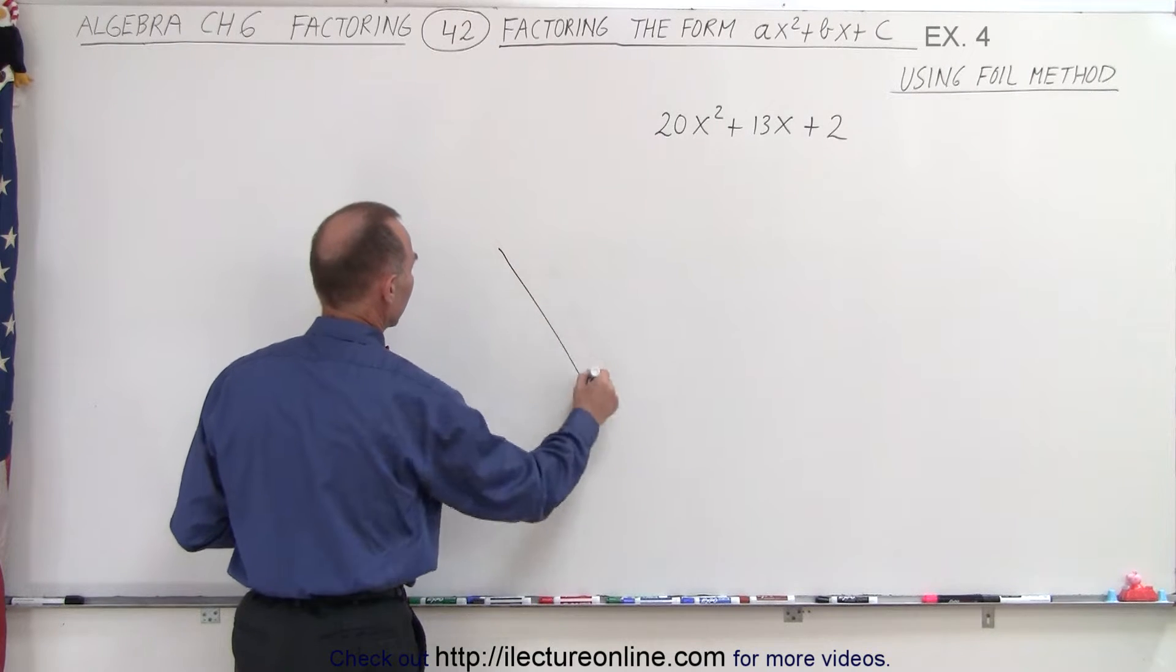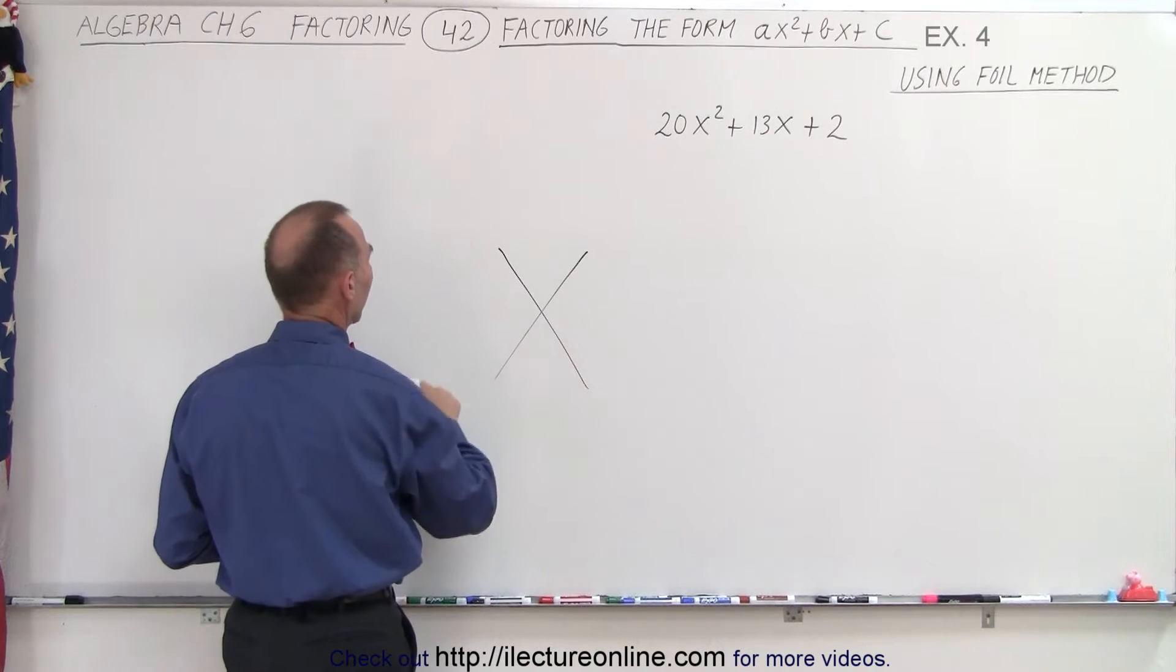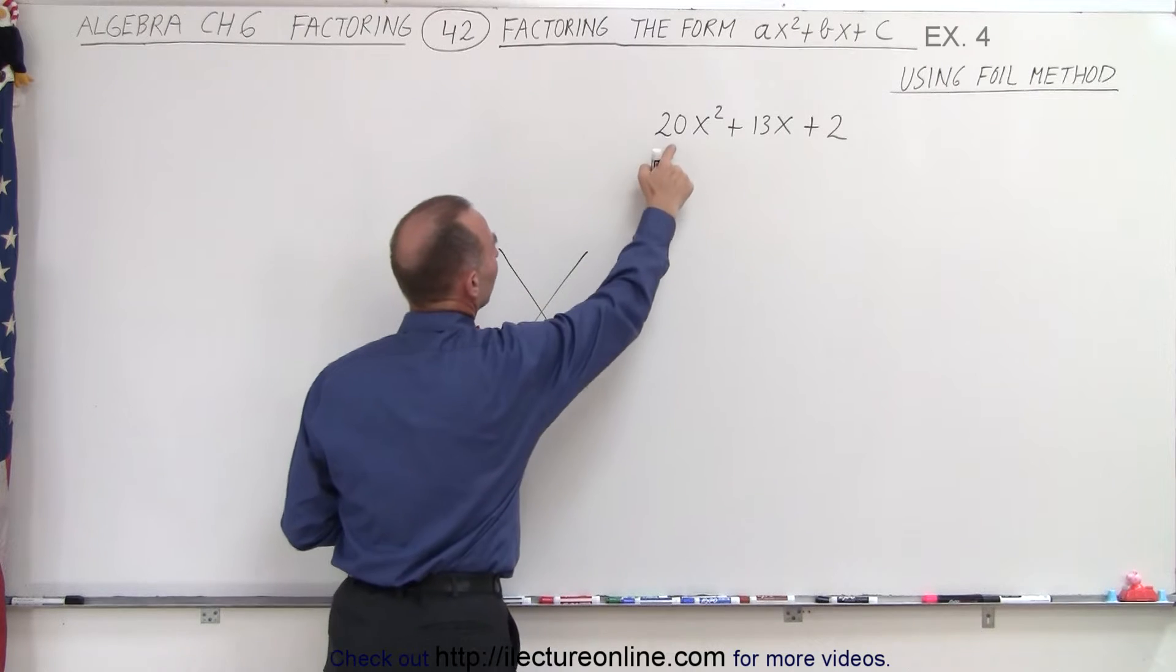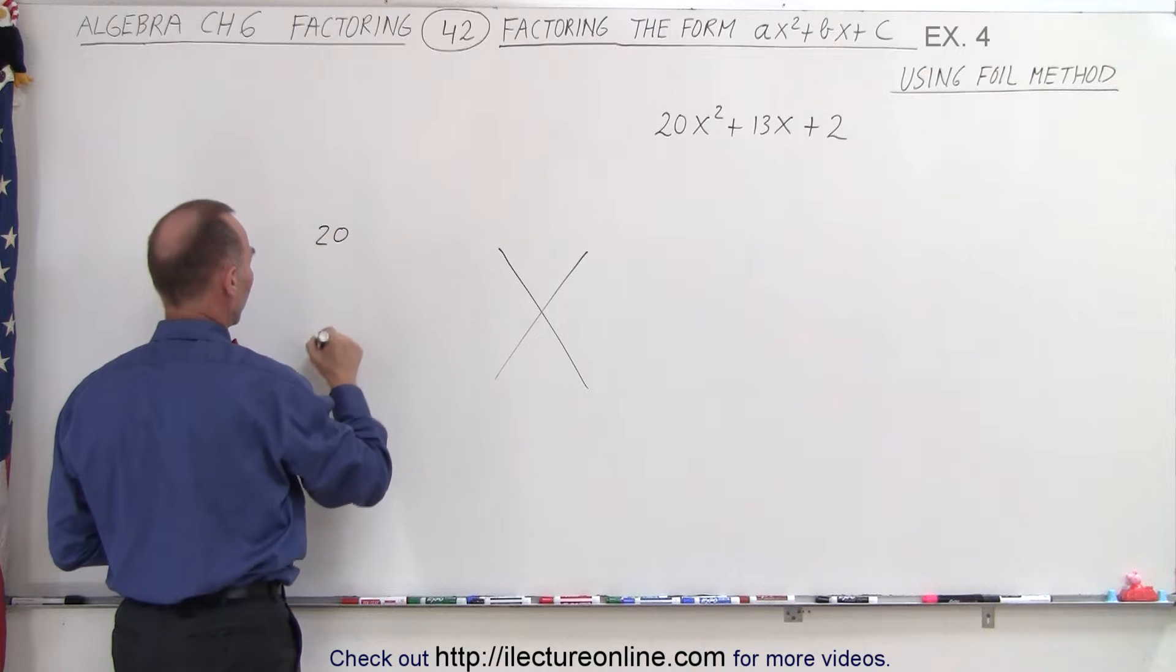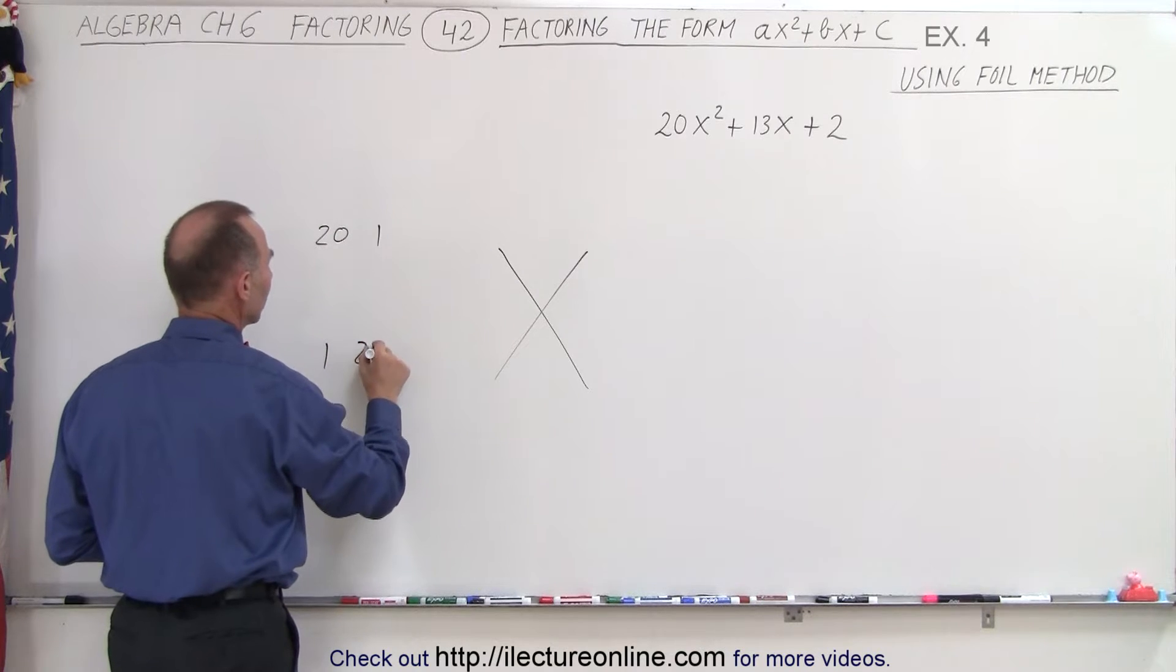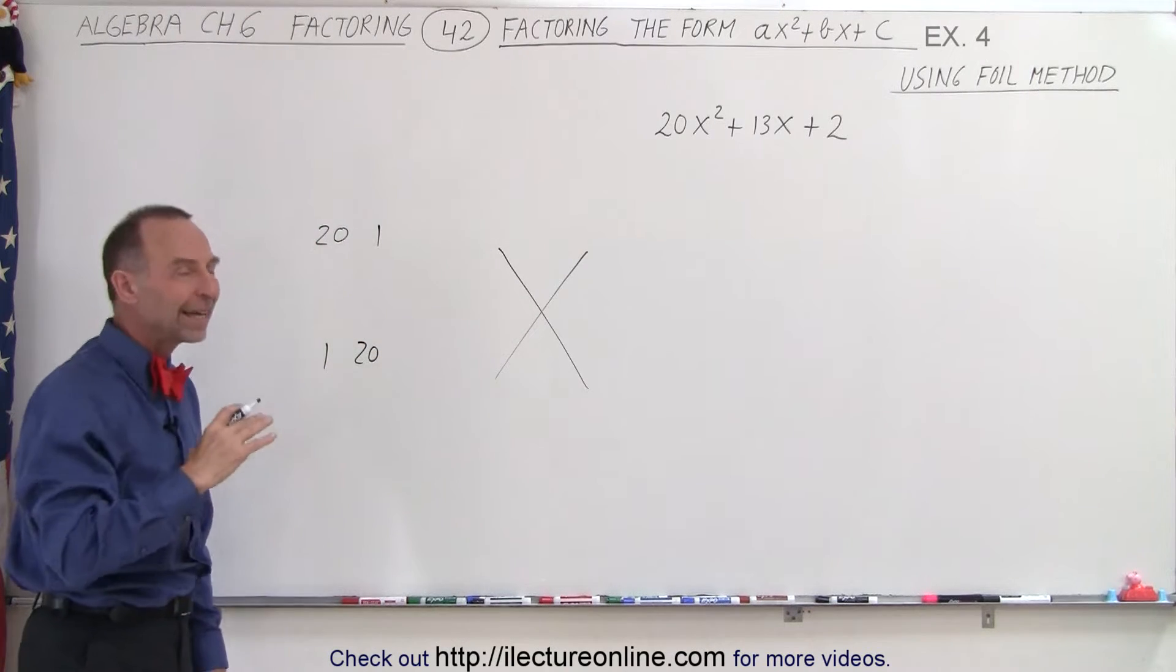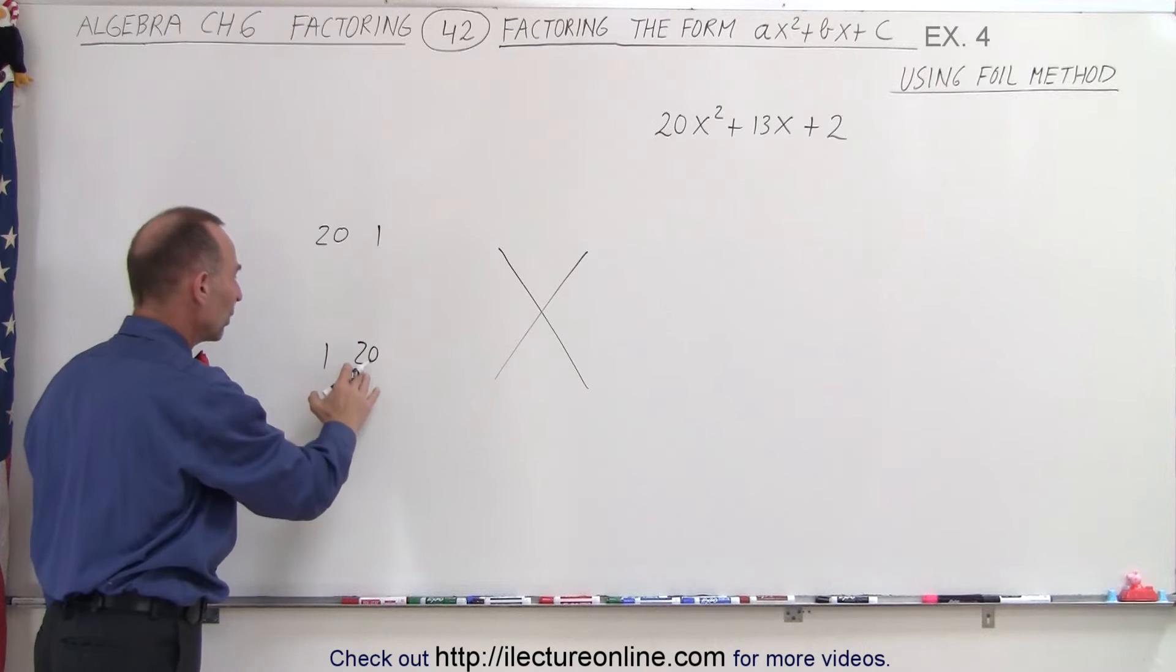Again we draw a FOIL and in the front we write all the combinations in which we get the number 20. So the combinations would be 20 and 1, and 1 and 20, even though those are very unlikely combinations because of the big number 20.